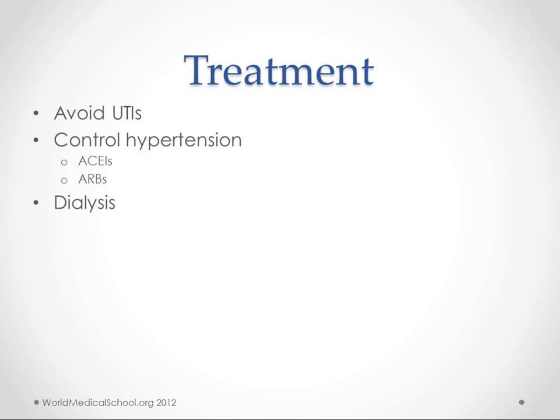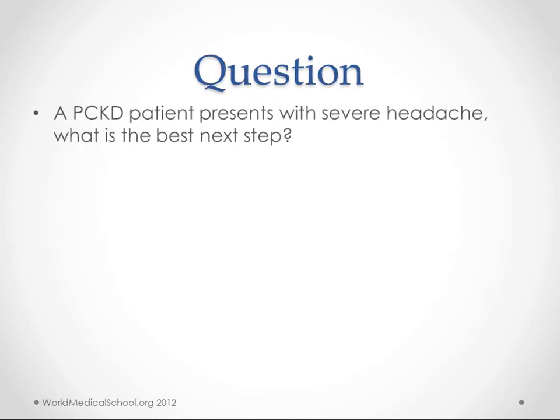For treatment, you want to avoid urinary tract infections because they can wreak havoc on your kidneys. You want to control hypertension with ACEs and ARBs. In end-stage renal disease, of course, you have to resort to dialysis. So if a patient with polycystic kidney disease presents with a severe headache, what is the next best step? What I'm getting at is you want to make sure that they don't have an aneurysm — it's a fairly common extra-renal manifestation. So double-check with a CT for cerebral aneurysm.